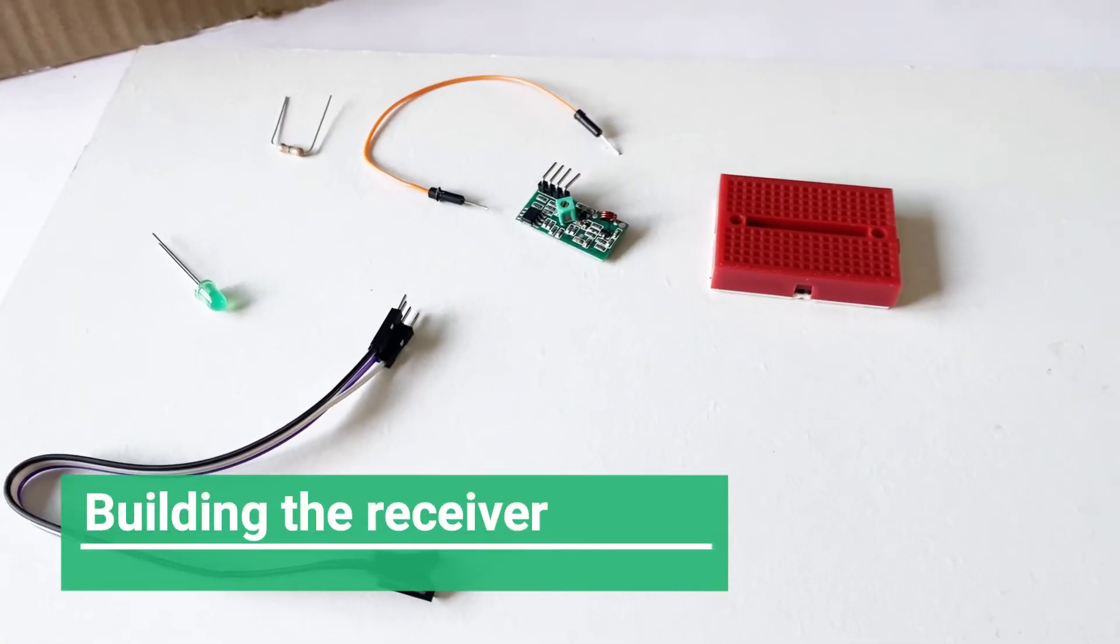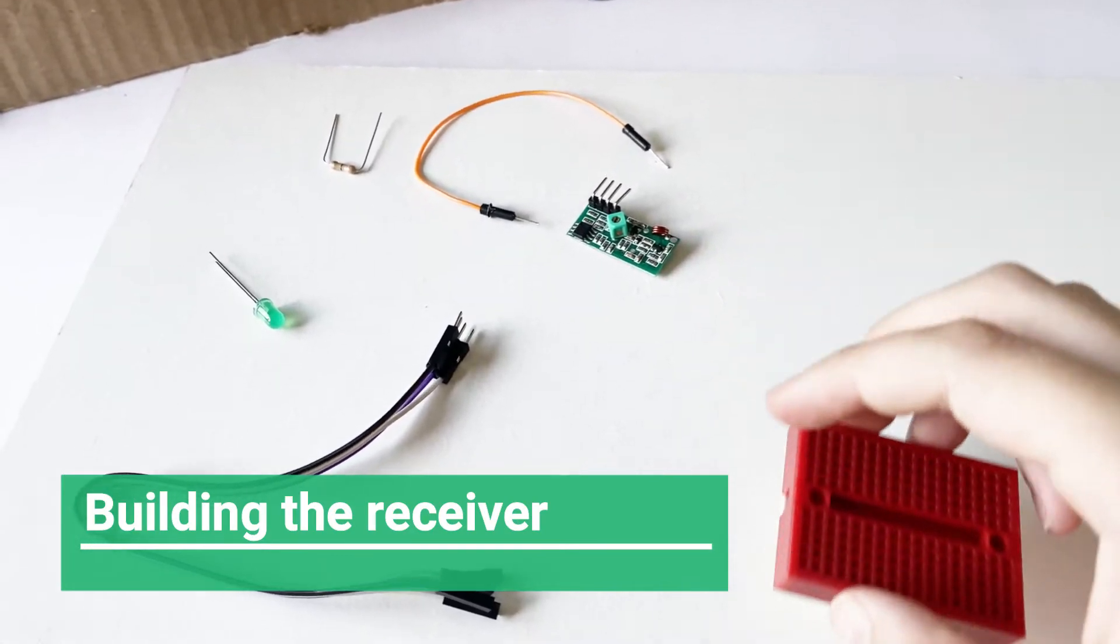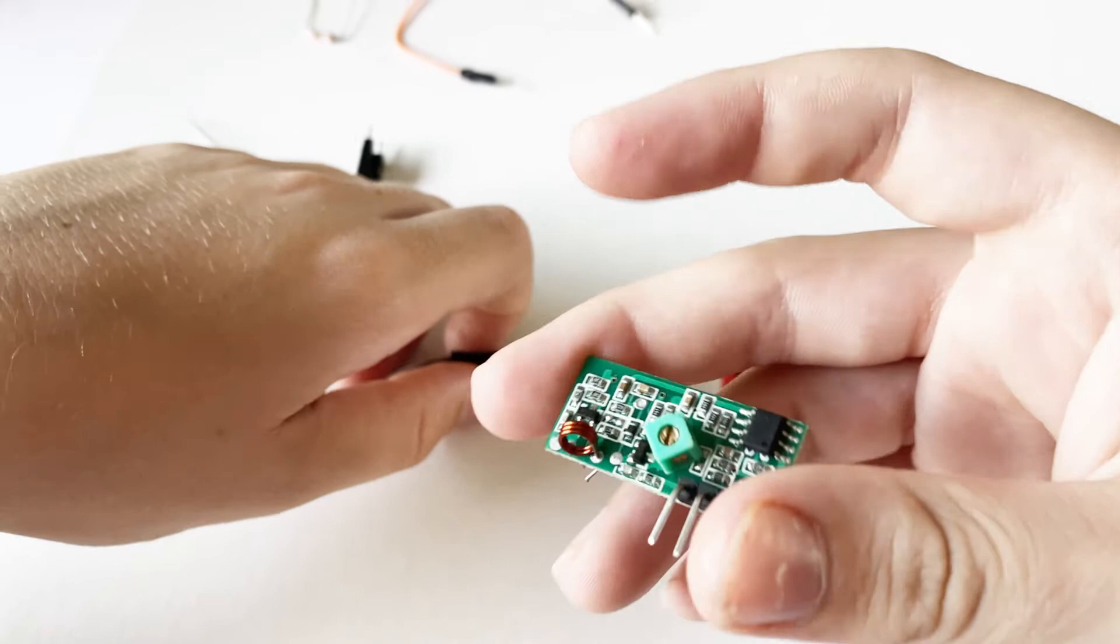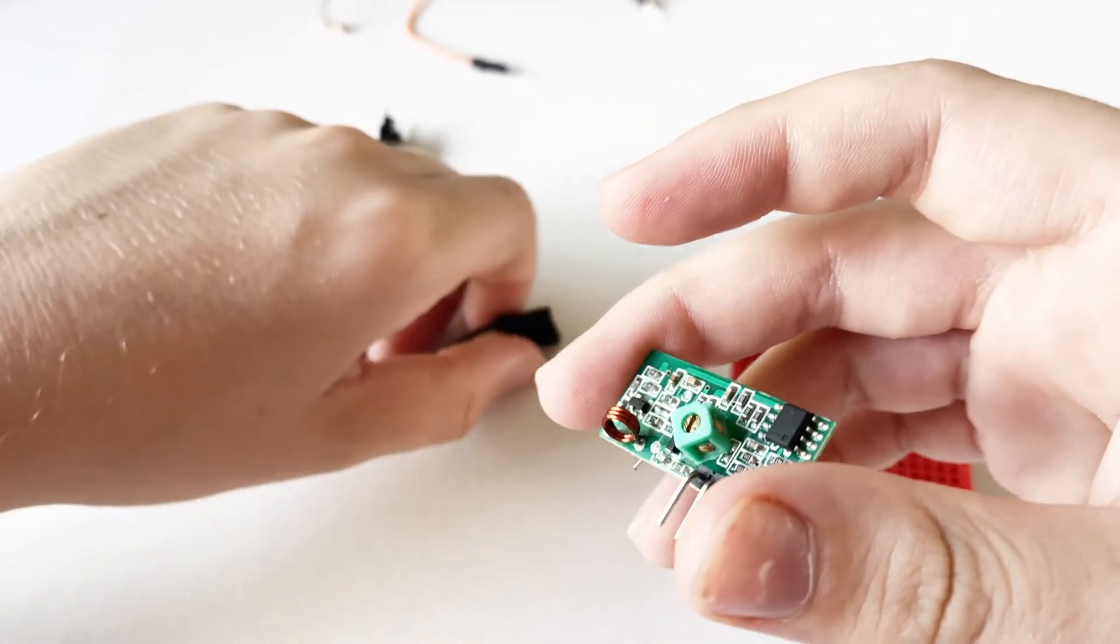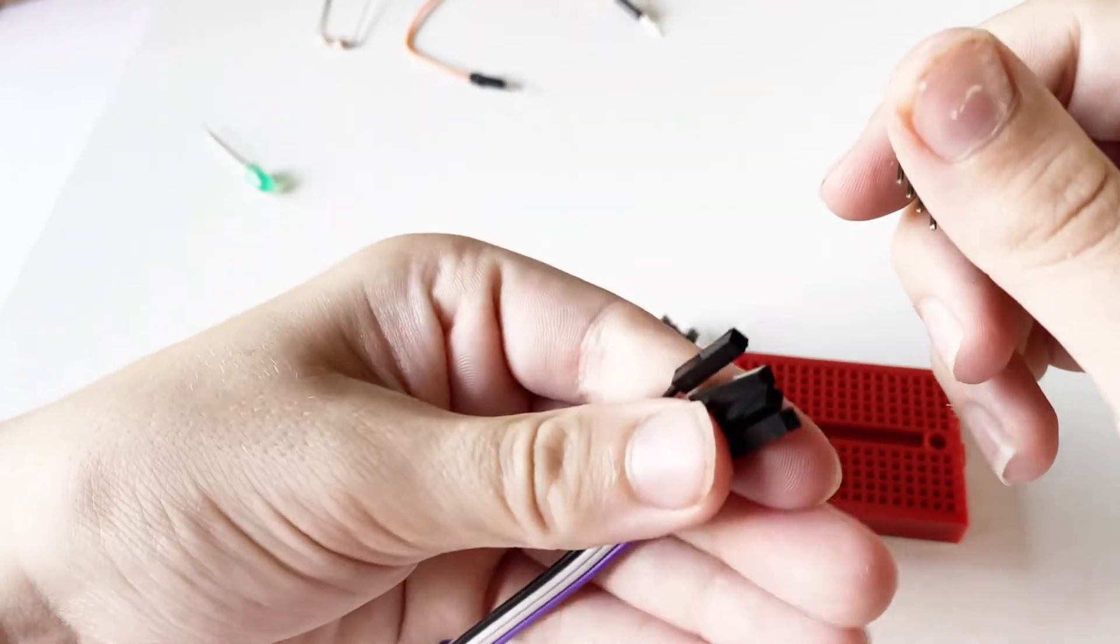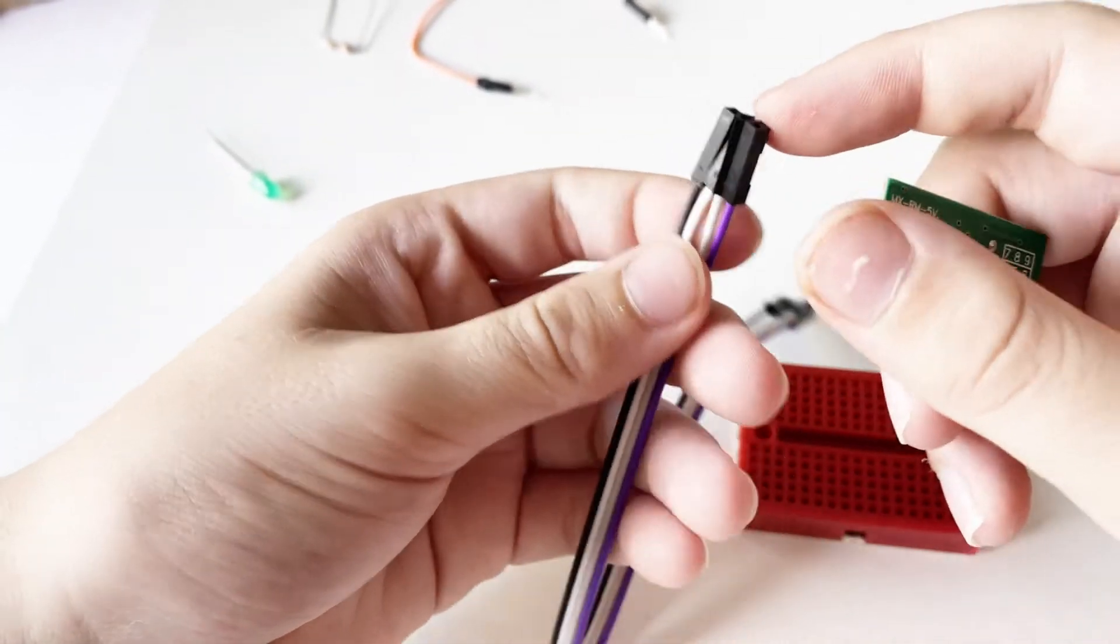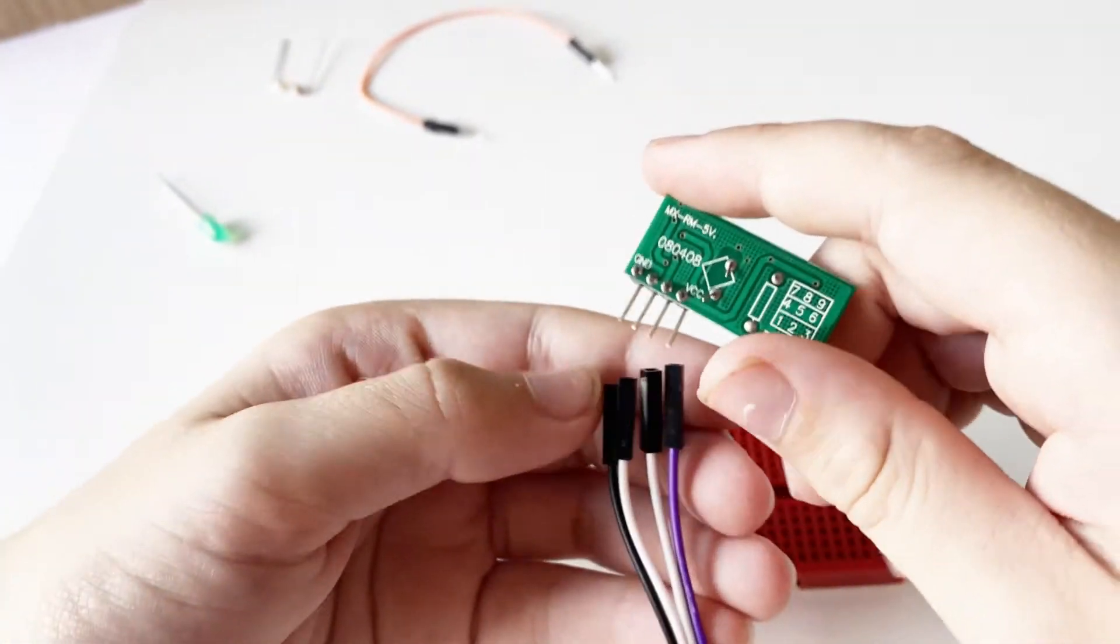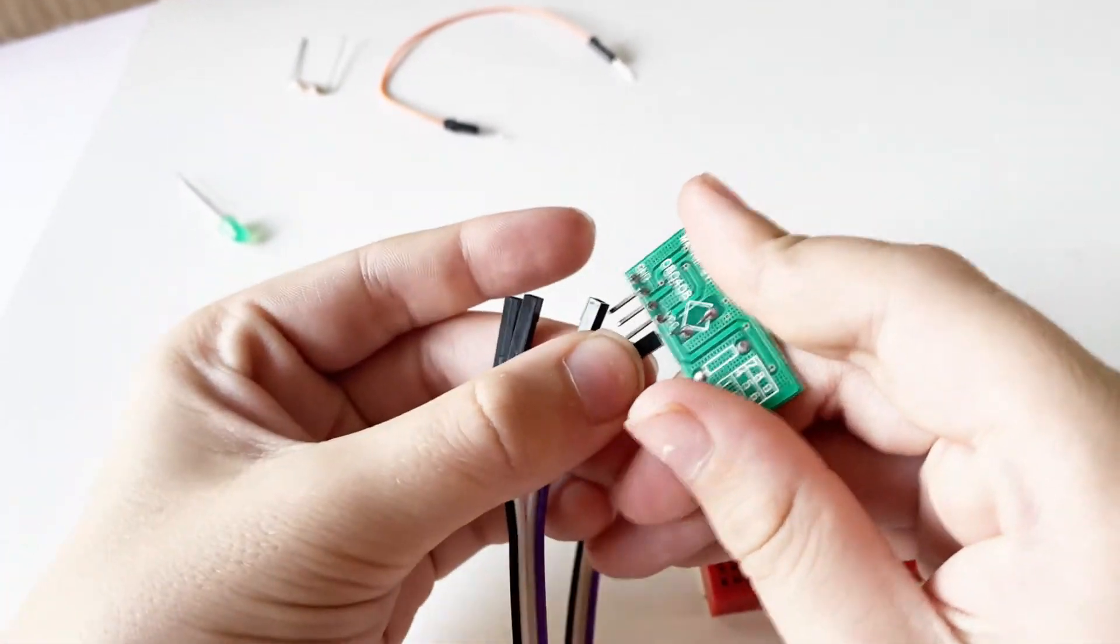So now we're going to make a wireless receiver. If we get a breadboard and the wireless receiver module, we can get the socket end of the male to female jumper wires and plug them into the pins on the receiver.